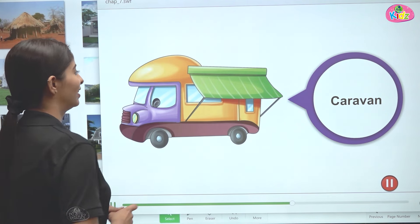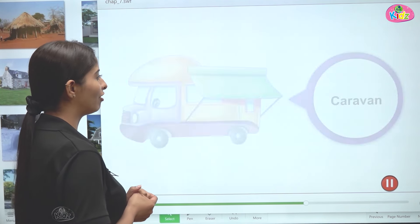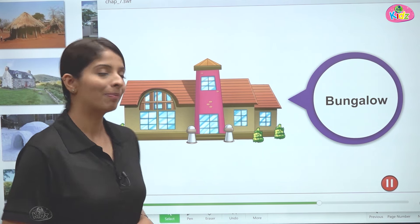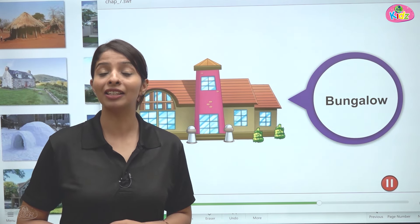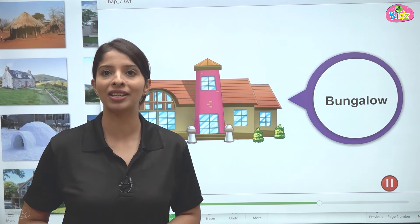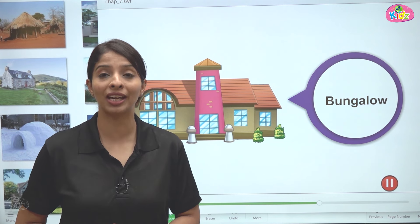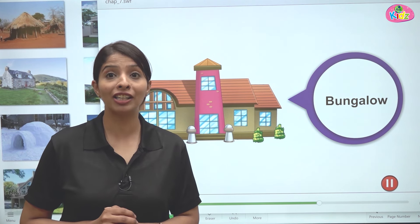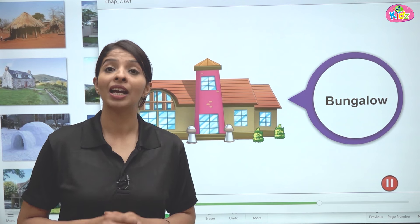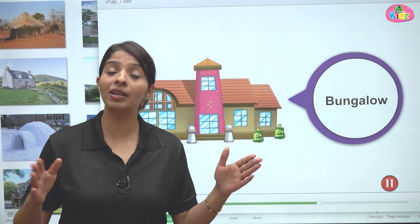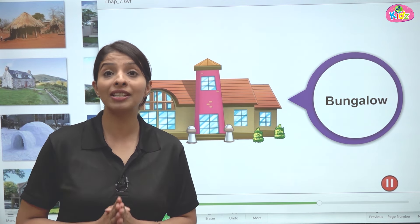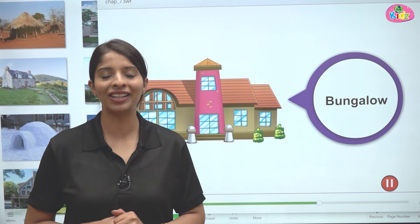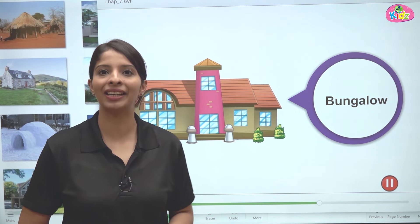The next type of house is the bungalow. You must have seen bungalows. These are big houses with many rooms. There is also a garden area. The best thing about a bungalow is that its surrounding walls are separate — they do not touch the walls of any other house. So these are bungalows.